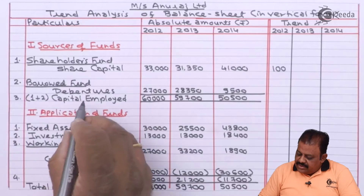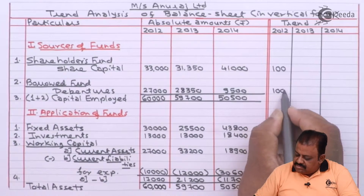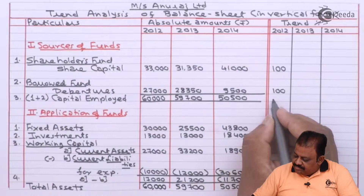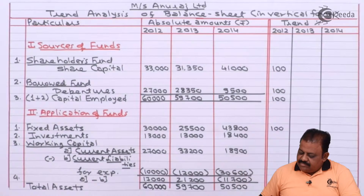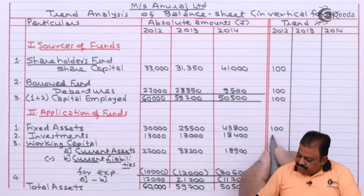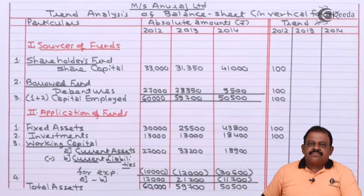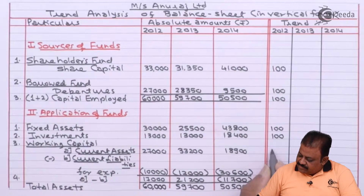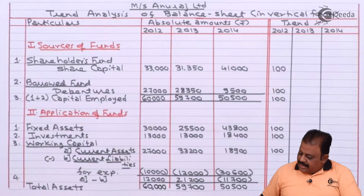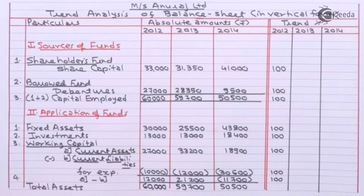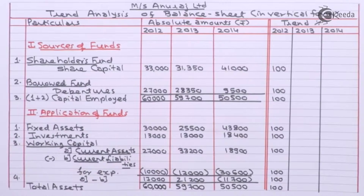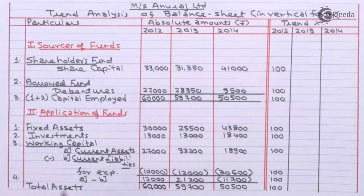So for the base year 2012: share capital = 100, debentures/borrowed funds = 100, total capital employed = 100, fixed assets = 100, investments = 100, current assets = 100, current liabilities = 100, net working capital = 100, total assets = 100. In the base year, every figure is taken as 100.